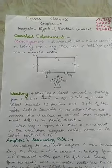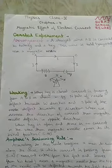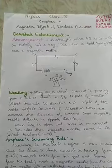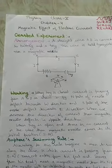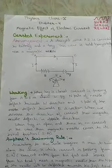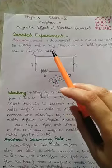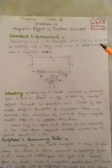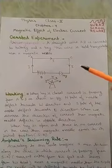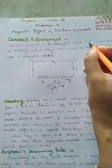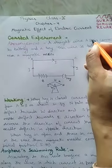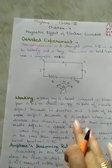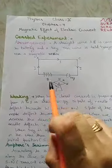This experiment mainly indicates the presence of a magnetic field due to a current carrying conductor. For this experiment, the arrangement includes a straight wire AC, which is connected with a battery B.